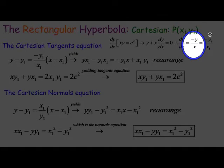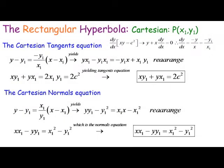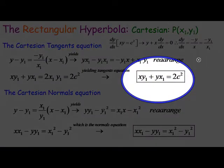The Cartesian gradient is minus y₁ on x₁, and that gives us the equation of the tangent. For xy equals c squared, the Cartesian tangent is: xy₁ plus yx₁ equals 2c squared.